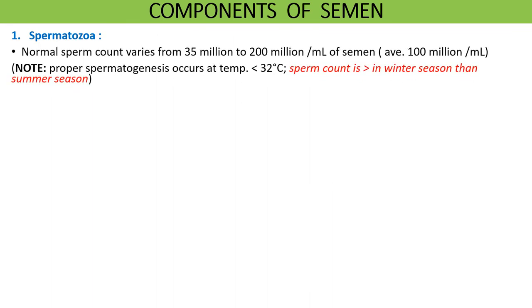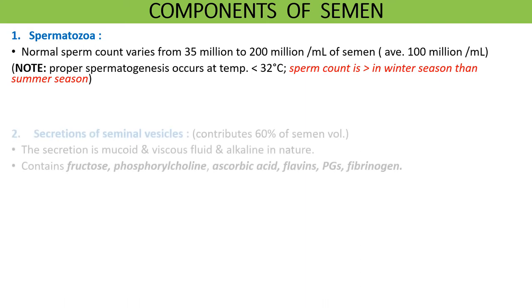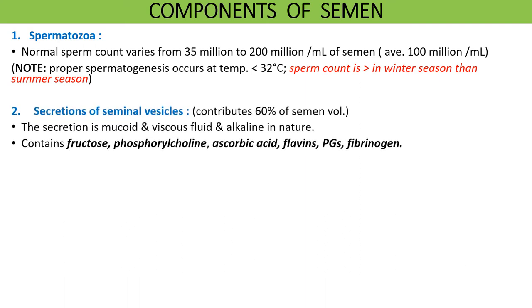Semen comprises various components. The normal sperm count varies from 35 to 200 million sperms per ml of semen, with an average of 100 million sperms per ml. Notably, the sperm count tends to increase in winter compared to summer, because spermatogenesis occurs best at lower temperatures, around 32 degrees Celsius.